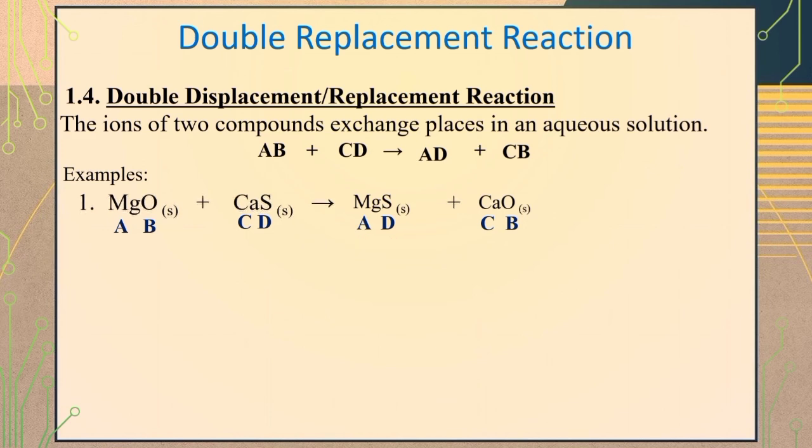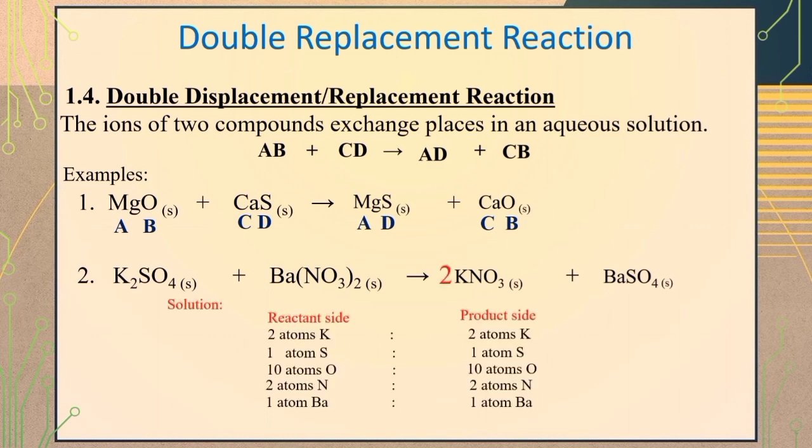In a reaction of compounds potassium sulfate and barium nitrate, it will form the products potassium nitrate plus barium sulfate. To balance the equation, just put coefficient of 2 before the chemical formula of potassium nitrate, giving you 2 atoms potassium, 1 atom sulfur, 2 atoms of nitrogen, 2 atoms of oxygen, and 1 atom of barium, both in the reactant and product side.